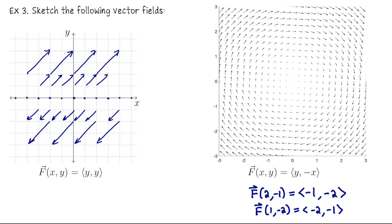Here's the vector field in MATLAB — you can really see the clockwise rotation. The vectors close to the origin have very small magnitudes that are hard to make out, and once again the magnitudes have been scaled relative to each other.